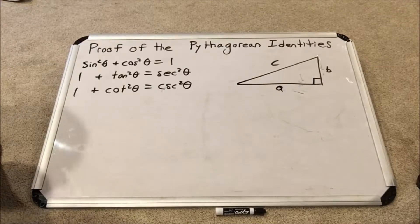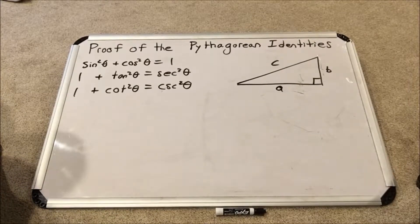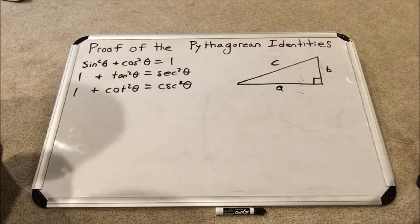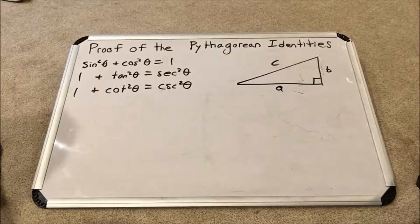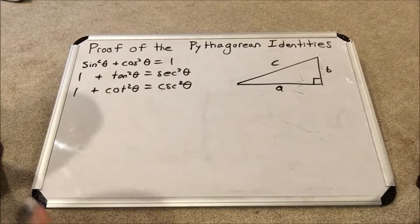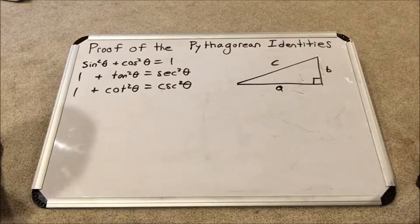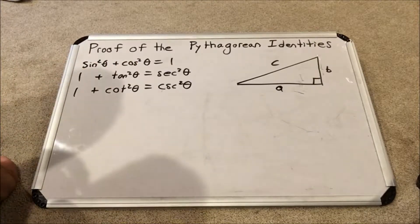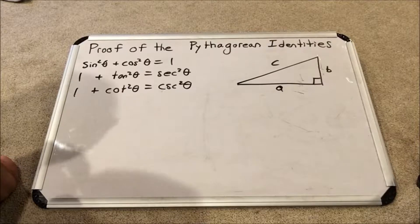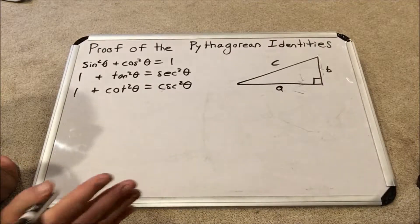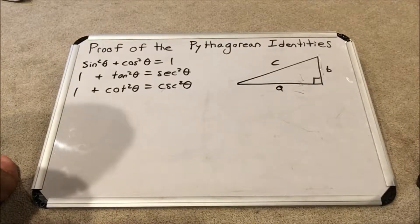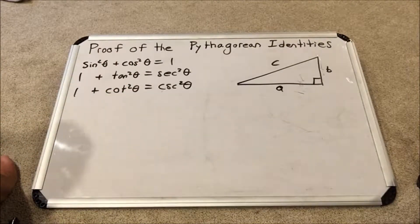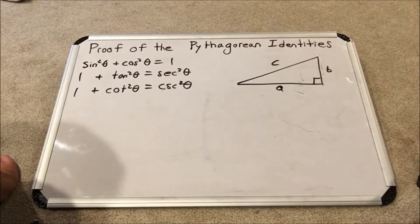Hello everyone and welcome to Tudor Terrific. Today I'm going to prove the Pythagorean identities. These are three identities commonly used in analytic trigonometry, which means algebra-like trigonometry. They are called identities because any angle can be substituted for theta — they are not equations where only certain angles work. Any angle substituted for theta works, so these are very important.